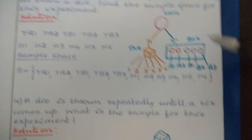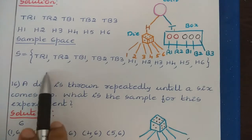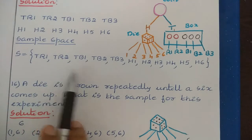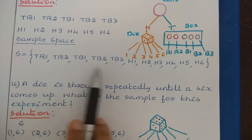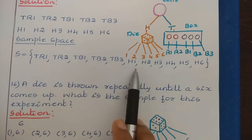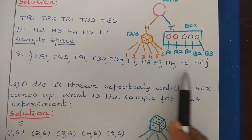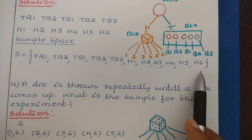If we get head, we throw a die giving possibilities H1, H2, H3, H4, H5, H6. If we get tail, we draw from the box giving possibilities (T,R1), (T,R2), (T,B1), (T,B2), (T,B3). So the sample space is S = {(T,R1), (T,R2), (T,B1), (T,B2), (T,B3), (H,1), (H,2), (H,3), (H,4), (H,5), (H,6)}.